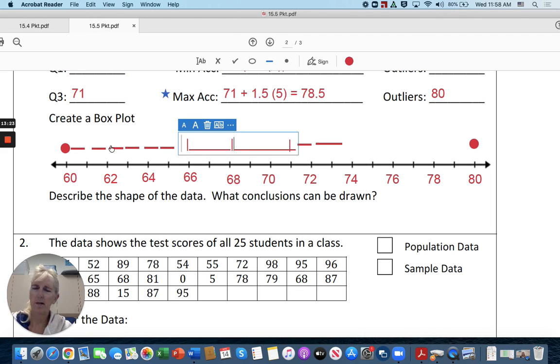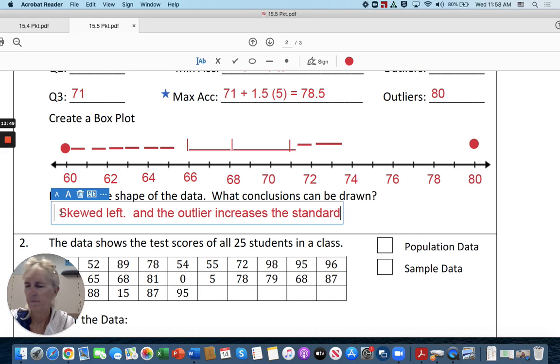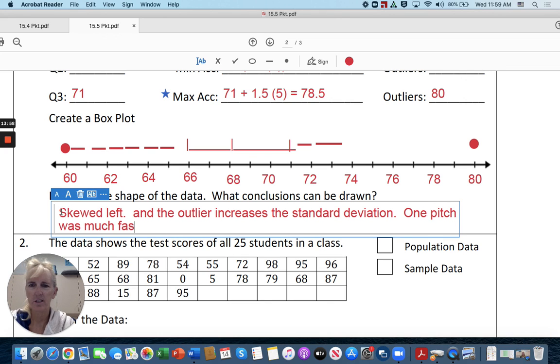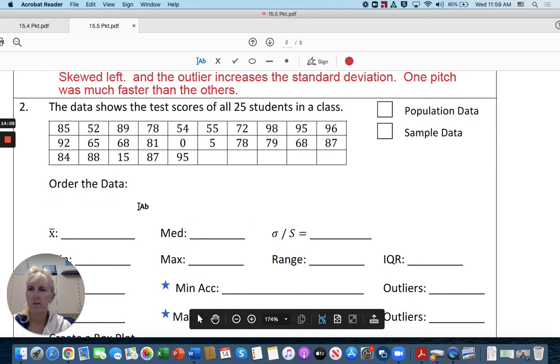So that's how you do that. Describe the shape of the data. Let's see isn't there like it's more spread out on the left side so it's skewed left. And the outlier increases the standard deviation one pitch was much faster than the others. All right, go ahead and work on the rest students you can do it you rock.